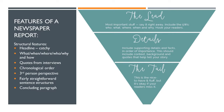Remember, in terms of how you prioritise your information: the lead — the top of the article — is where the most important stuff goes. Say it right away, include the five W's (who, what, where, when and how) and hook your readers in. Then you go into the details: include supporting details and facts in order of importance, including context, background and quotes that help tell your story. And finally the tail — this is nice to have, but it's okay if your readers miss it. So any other details, any kind of summary comment or reiteration, goes in the tail.